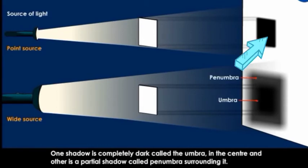We do not obtain Penumbra from a point source because the light rays falling on the shadowing object are completely blocked by it.